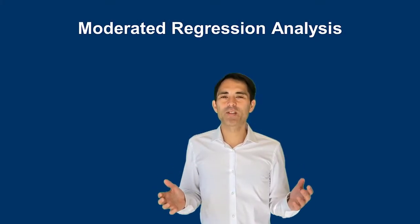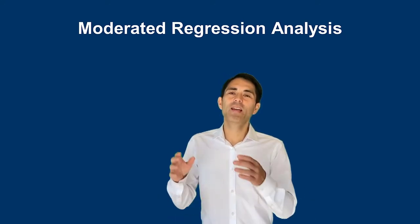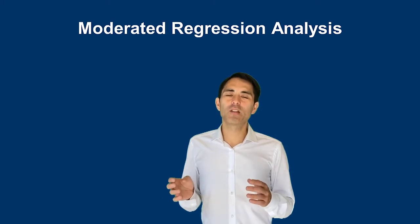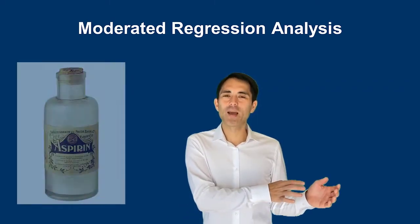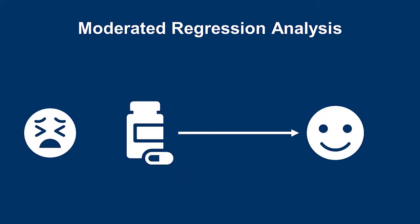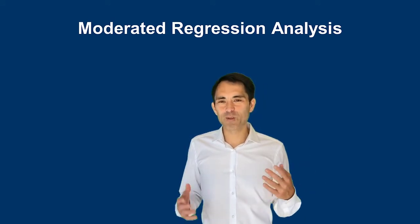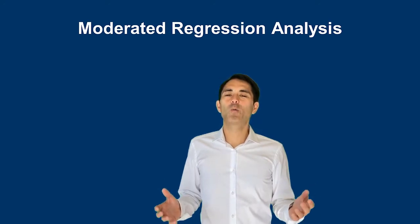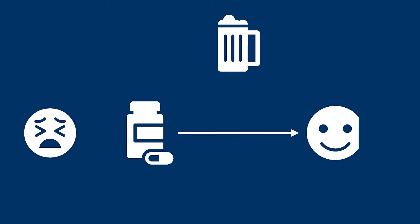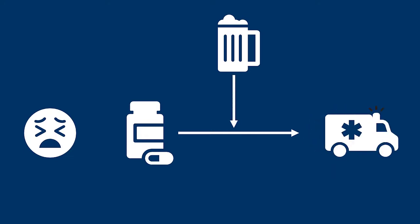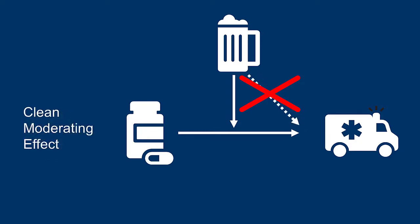One assumption underlying regression analysis is that the independent variable should be significantly related to the dependent variable. Taking aspirin reduces pain — there's a direct relationship. Then the moderating effect, using the example of alcohol, influences this relationship: if you drink more alcohol, then in combination with the drug consumption it would increase pain rather than reduce it. Ideally, the moderating variable should have no significant relationship with the dependent variable on its own. That's what we would call a clean moderating effect.